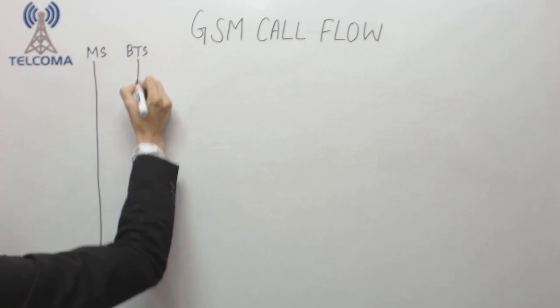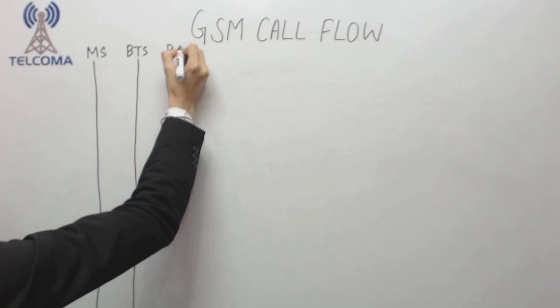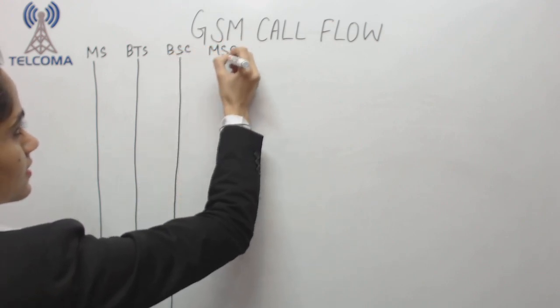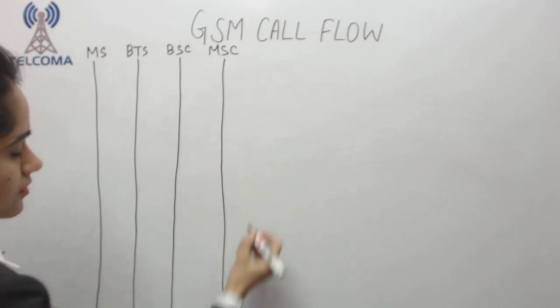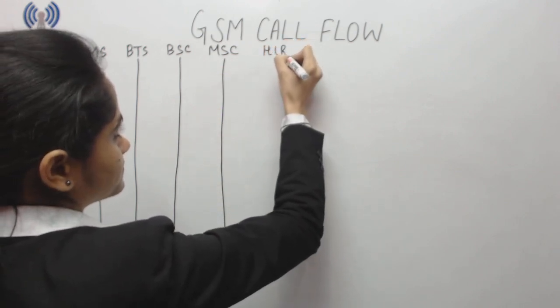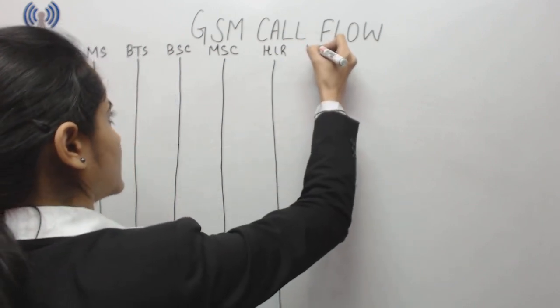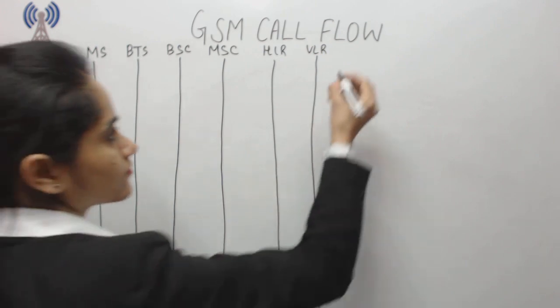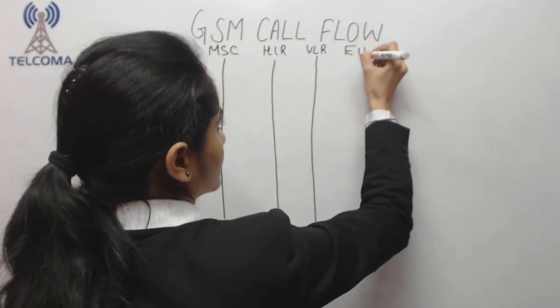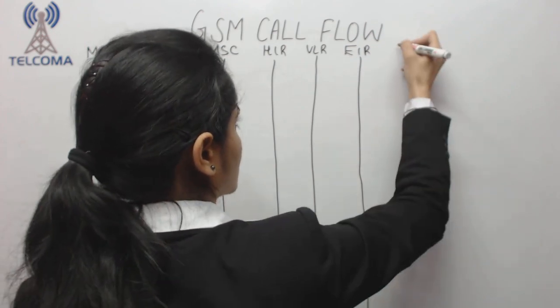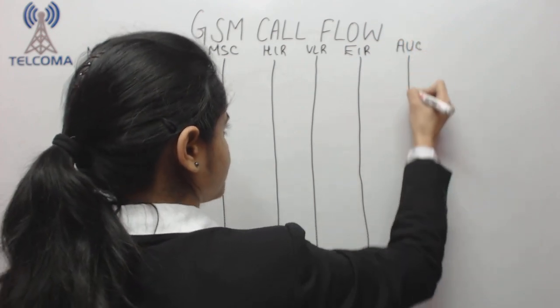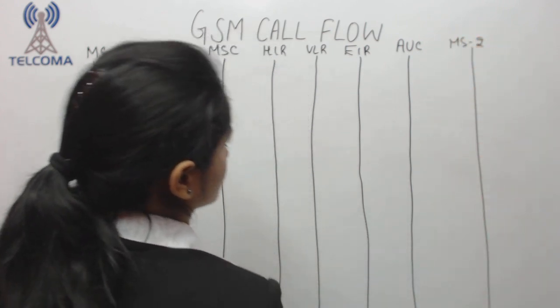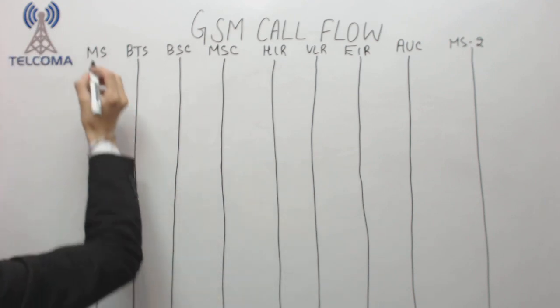After that we have BSC, MSC, HLR, VLR, EIR, AU, and MS2. We will assume MS2 is mobile station 2 where we have to call.